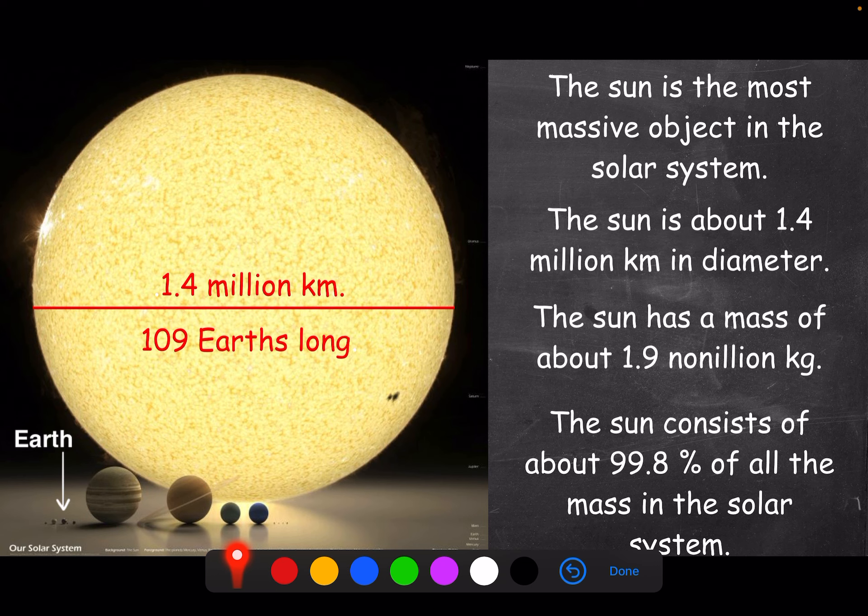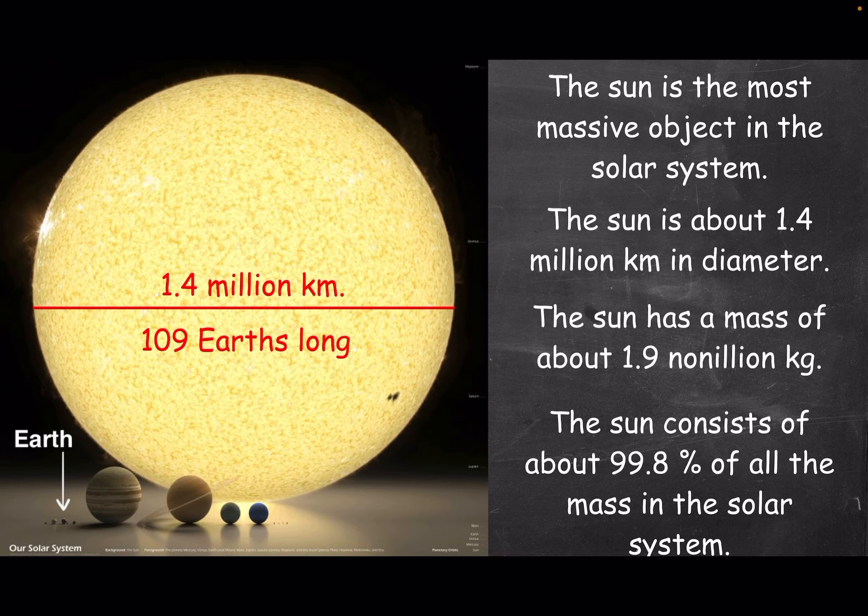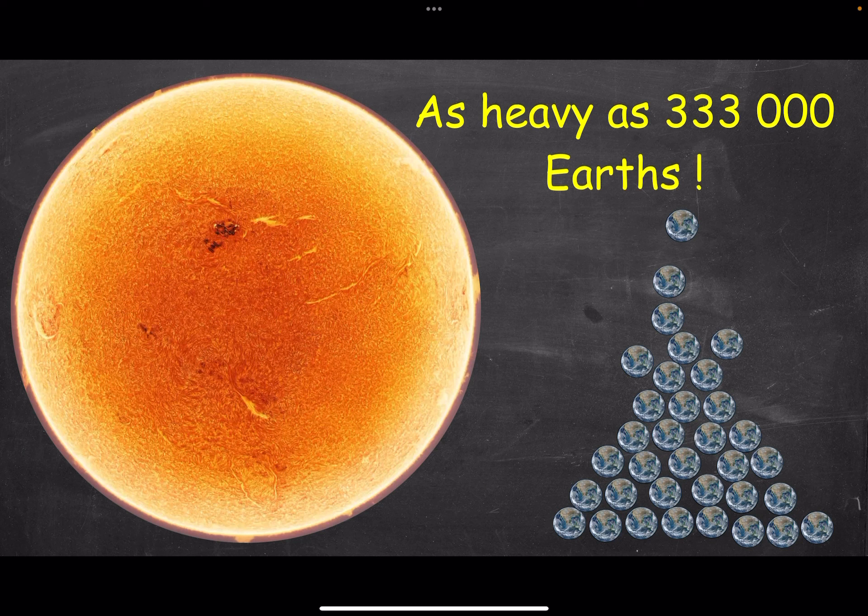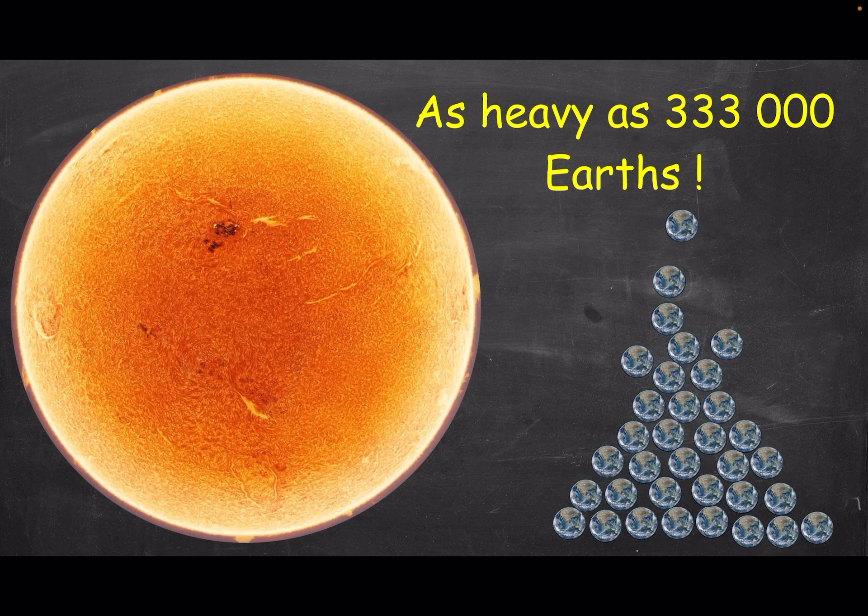The Sun has a mass of about 1.9 nonillion kilograms. If you didn't know, a nonillion is exactly 30 zeros. That is a lot of zeros. And if I had to give you an estimation of how many Earths that would be, it would be as heavy as 333,000 Earths.